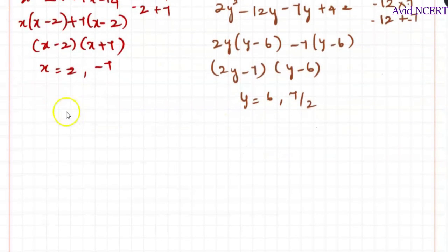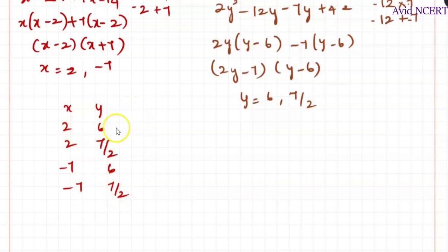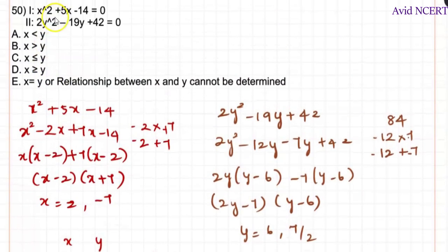Comparing x and y: x = +2 vs y = 6: x < y. x = +2 vs y = 7/2: x < y. x = −7 vs y = 6: x < y since x is negative and y is positive. x = −7 vs y = 7/2: x < y. Considering all cases, the relationship between the two equations is x is less than y.